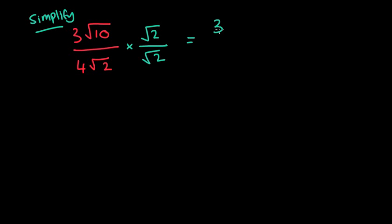That becomes 3 root 20, because 10 times 2 is 20, over - and we know it's going to be 4 times root 2 times root 2, which makes 2. So we get 3 root 20 over 8.